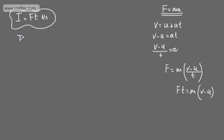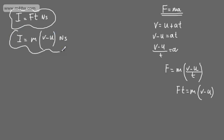So the second way we can write the impulse — you'll see it written as I or J — will be equal to m, the mass, multiplied by the final velocity minus the initial velocity. We know velocity is a vector quantity, so impulse is a vector quantity also. We've got impulse equal to mv minus mu newton seconds.